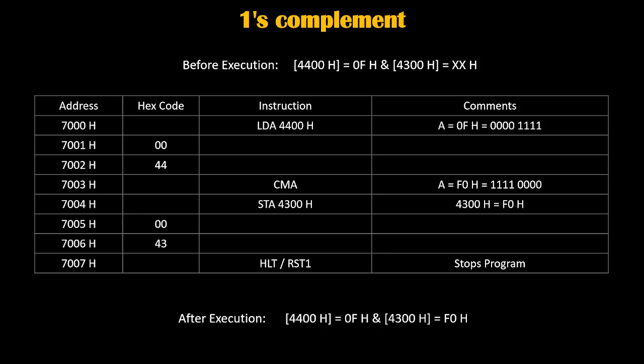So before execution, 4400h was holding 0Fh. After execution, we have taken the complemented value of that and stored it at 4300h. And 4300h has become F0h.